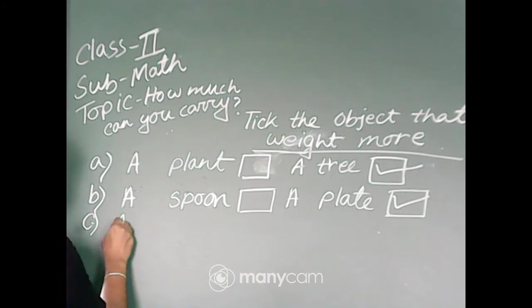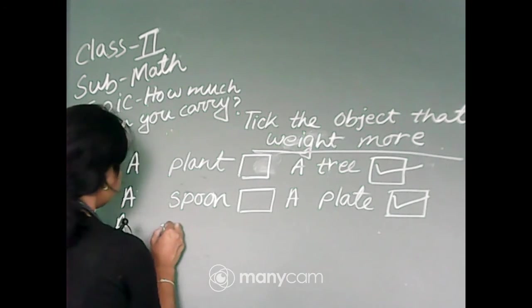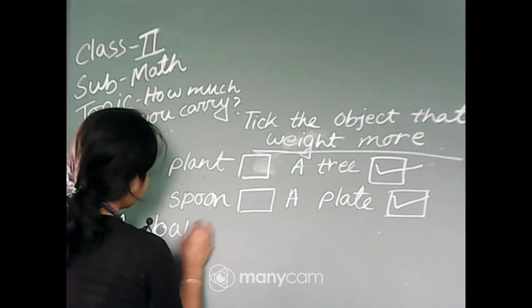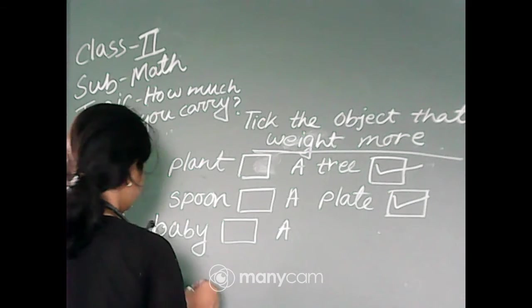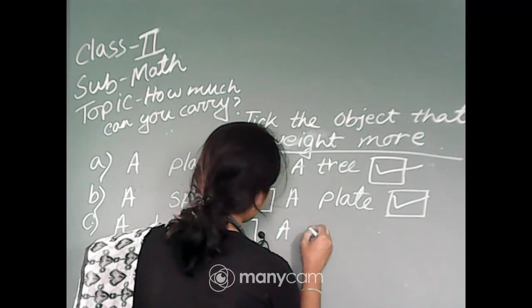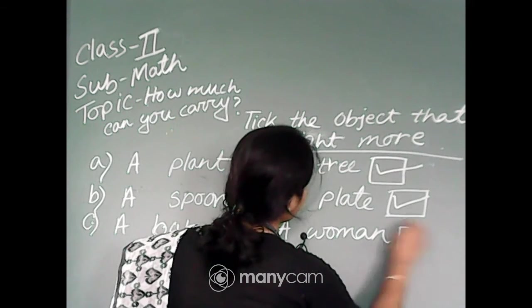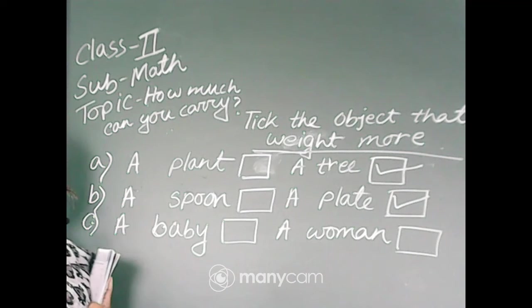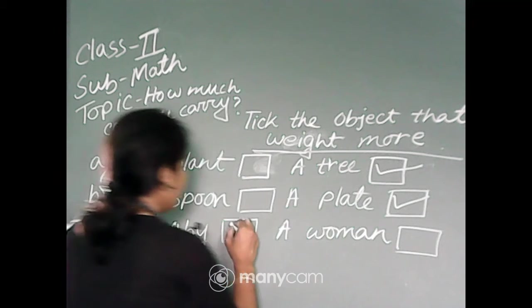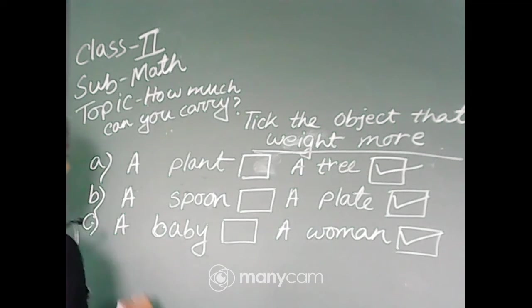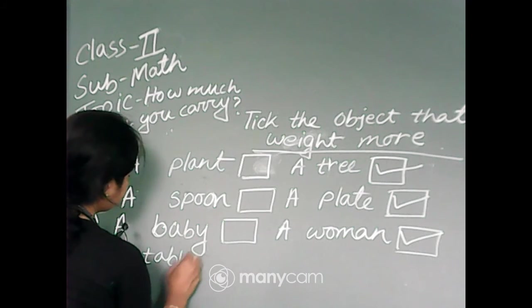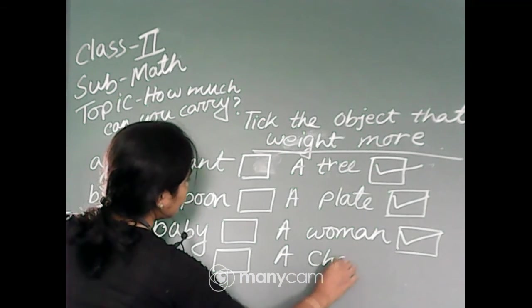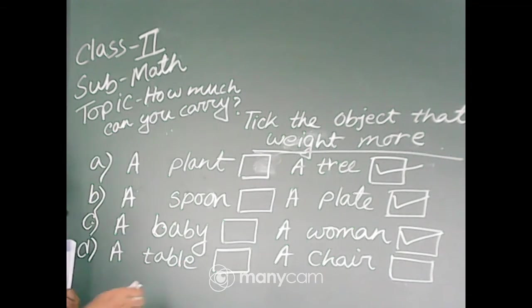Next, number C: a baby or a woman. Baby or woman? And next, number D: a table or a chair. Which object weighs more? Weight more, table, so tick table.